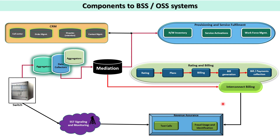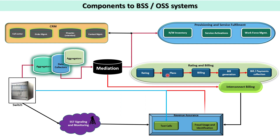From interconnect billing also, CDRs are received by the revenue assurance team, because they need to identify that there is no revenue leakage. They receive CDRs from rating and billing, from interconnect, and from SS7 monitoring systems, to see whether there is any billing leakage happening in any function or whether the tariffs and rating are being done correctly. This is the main functionality of the revenue assurance team, and this is where different systems are connected with each other.